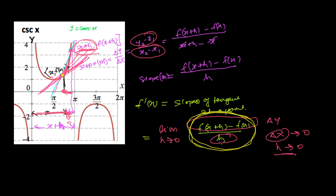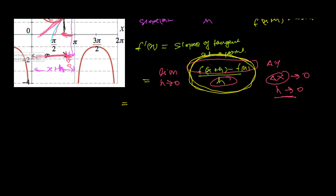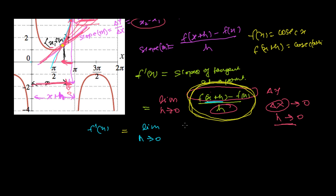So the derivative is the slope of the tangent to the curve at a point. Now let's plug in our values. Our function f(x) is cosec(x), so f(x+h) is cosec(x+h). Therefore, f′(x) equals the limit as h tends to zero of [cosec(x+h) minus cosec(x)] divided by h.